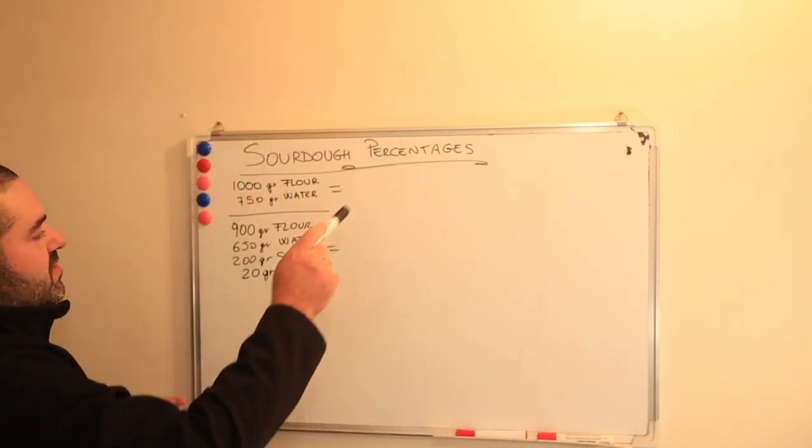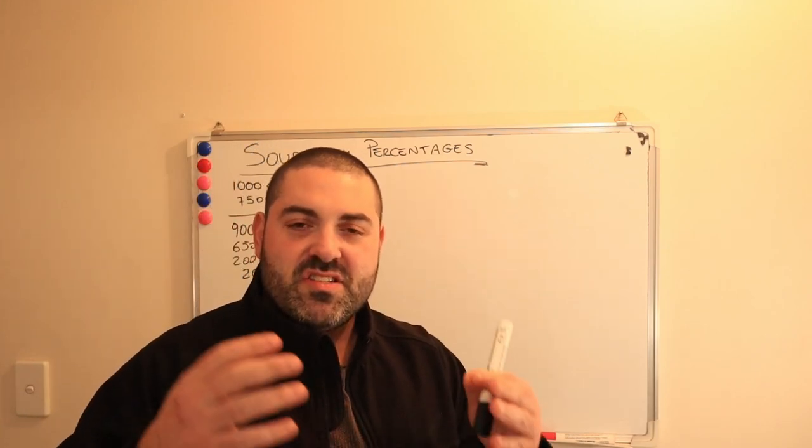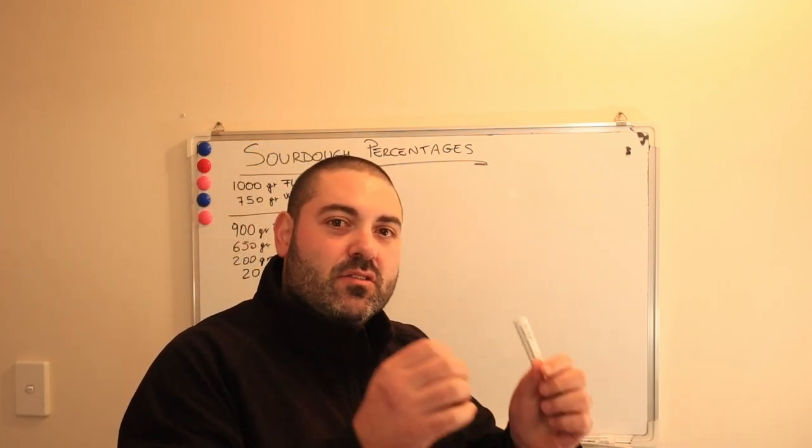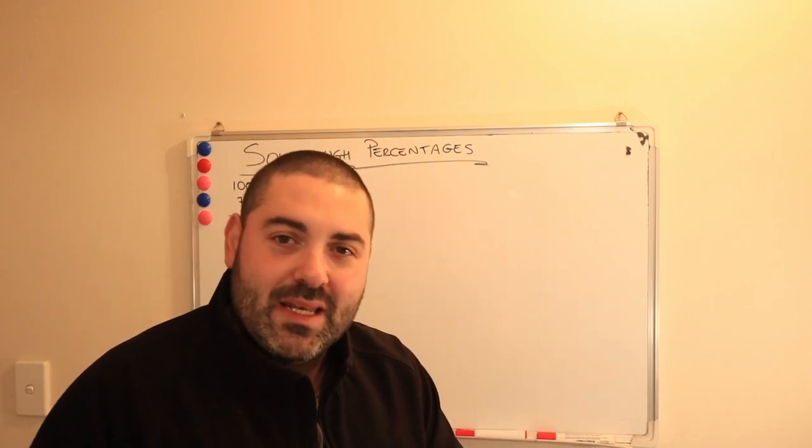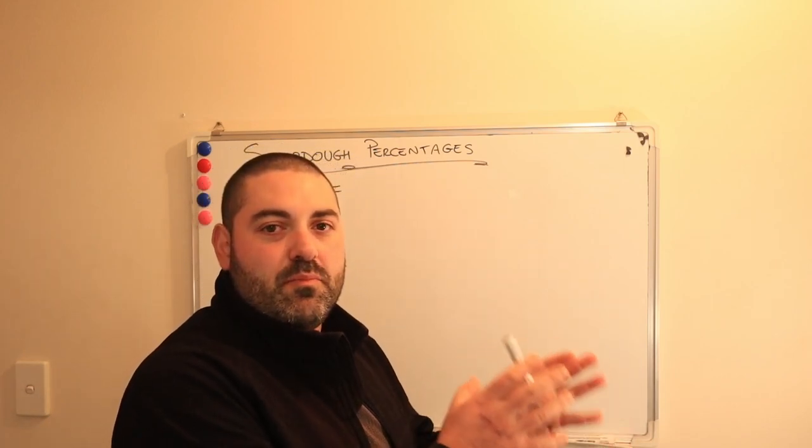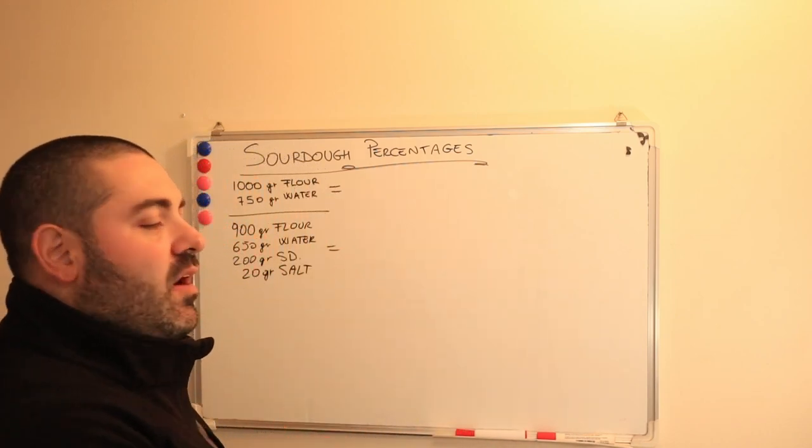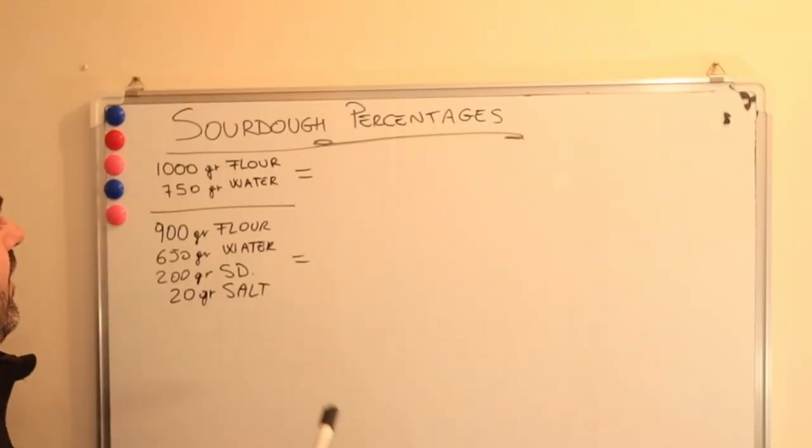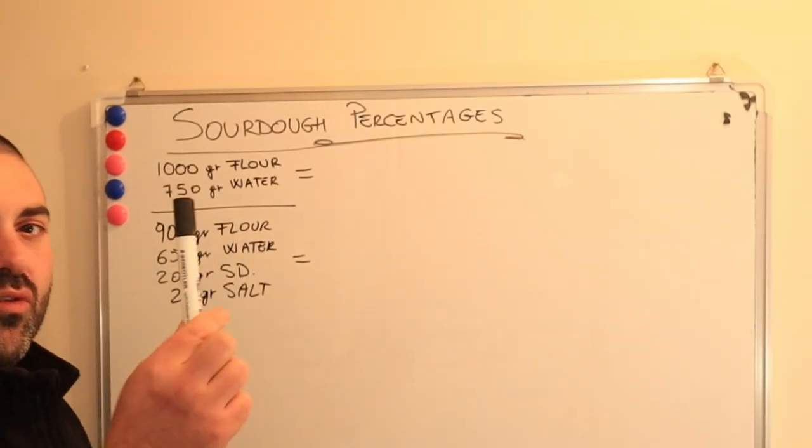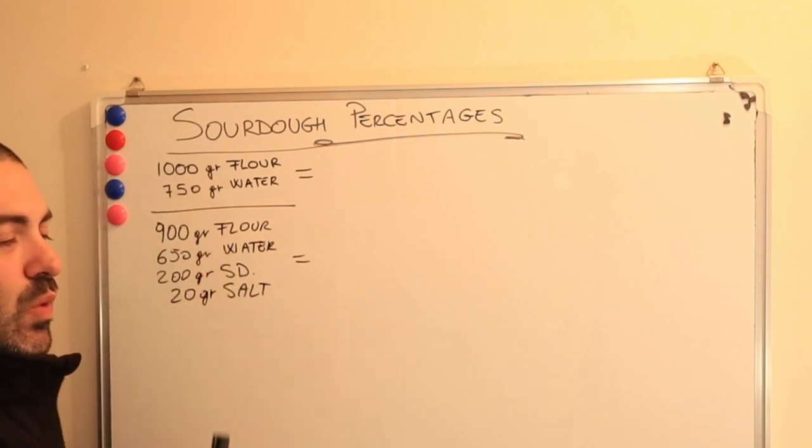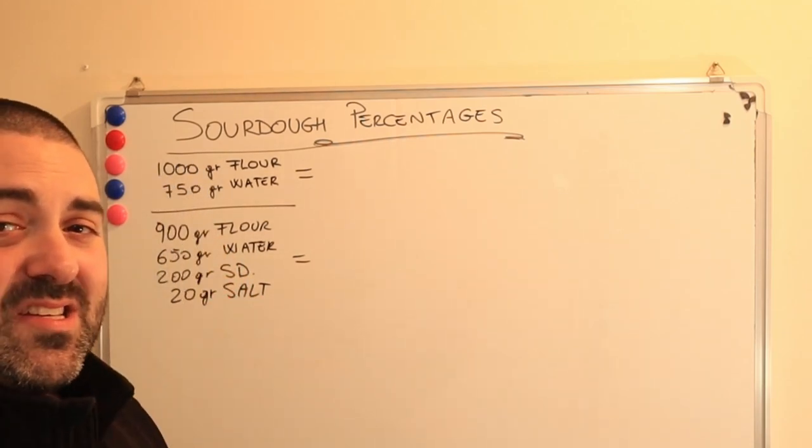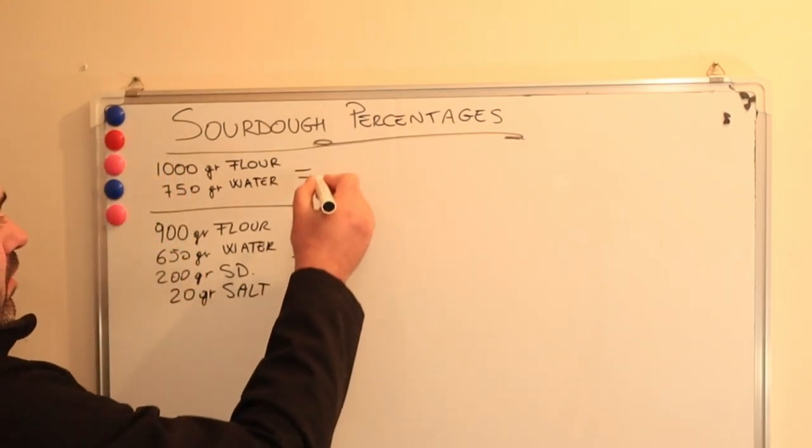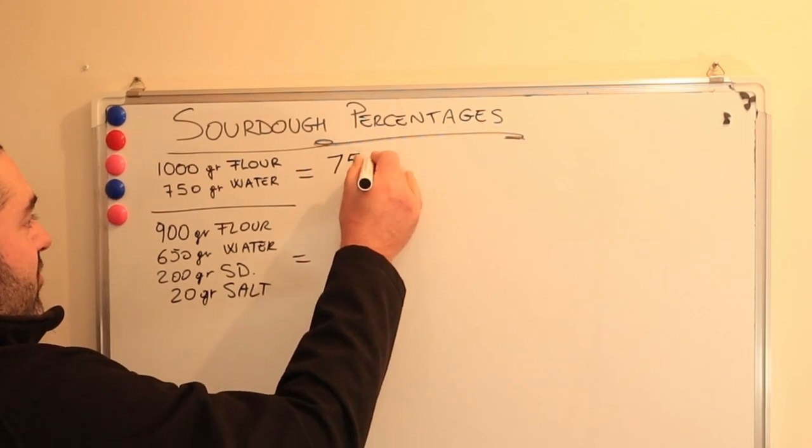So sourdough percentages. What are sourdough percentages? Percentages in baking are used to find out how many grams or kilos we need to produce a certain product. In this case we're talking about a white loaf of bread made with sourdough culture. Let's begin by identifying the amount of flour that we want, which is one kilo, a thousand grams, and what percentage we want of water. In this case I'm aiming for a 75% hydration.